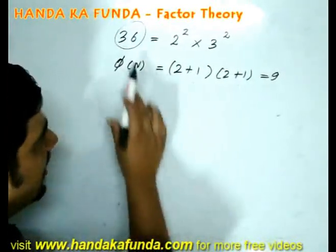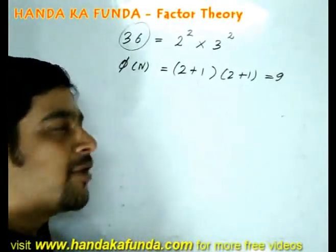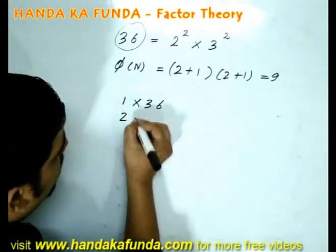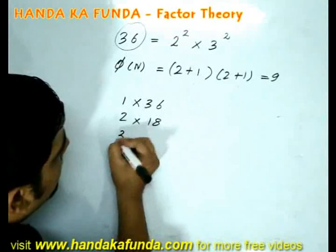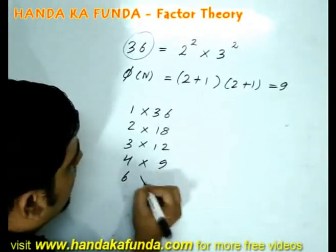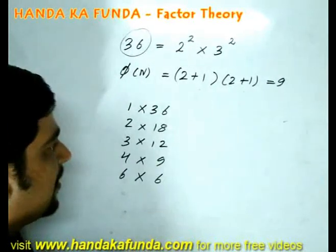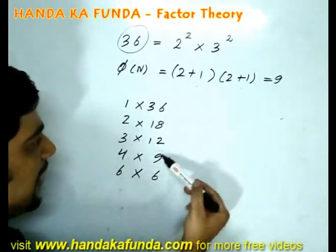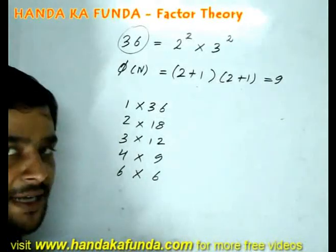In how many ways can it be expressed as a product of 2 factors? That would be 1 into 36, 2 into 18, 3 into 12, 4 into 9 and 6 into 6. The factors, if you want to note, they are 1, 2, 3, 4, 6, 9, 12, 18 and 36, the 9 factors.